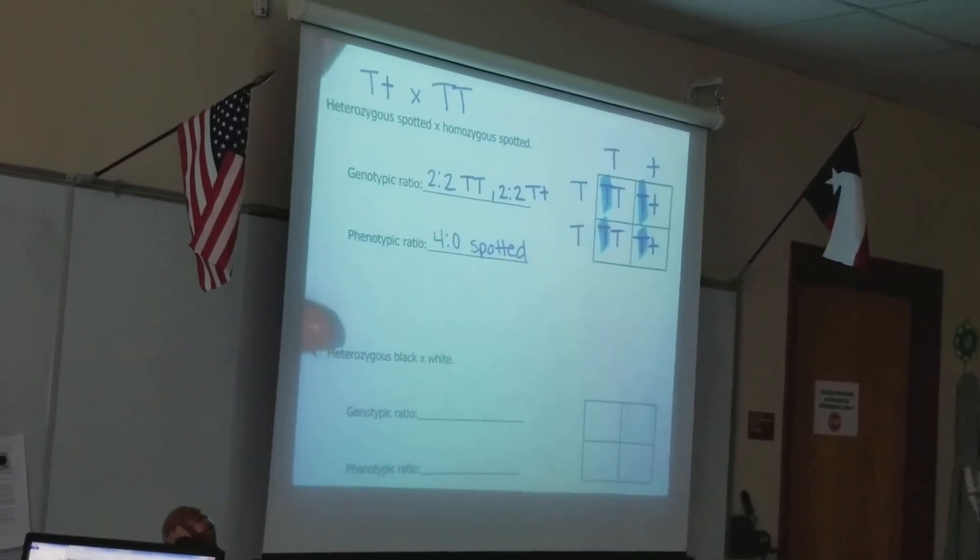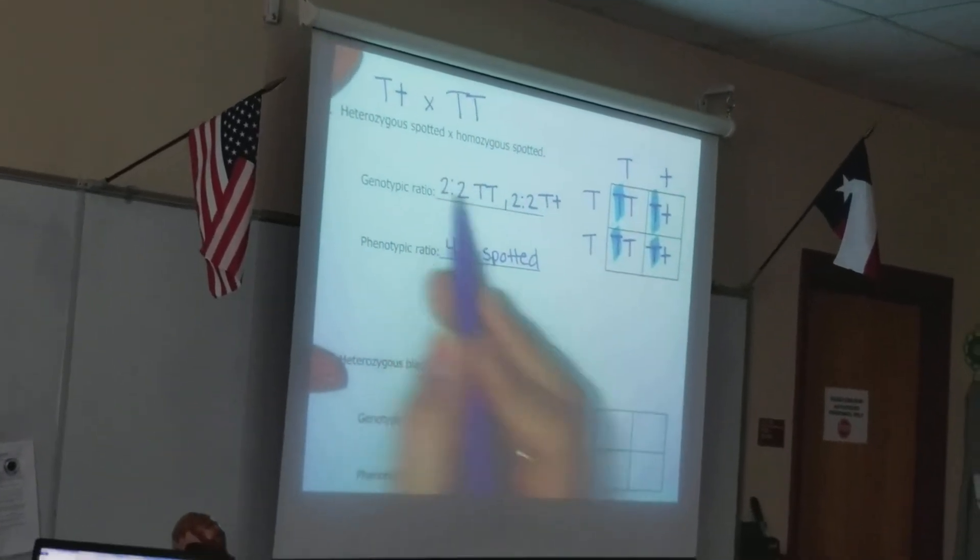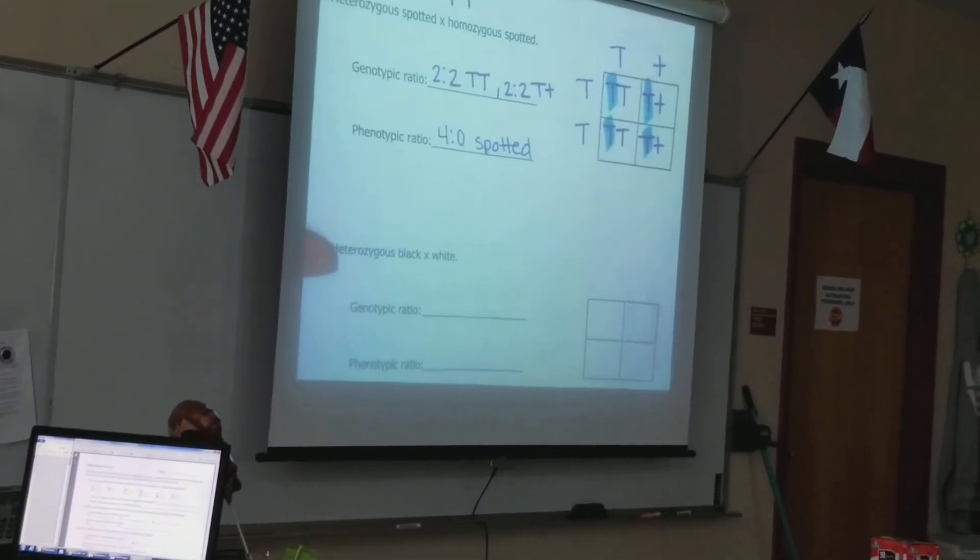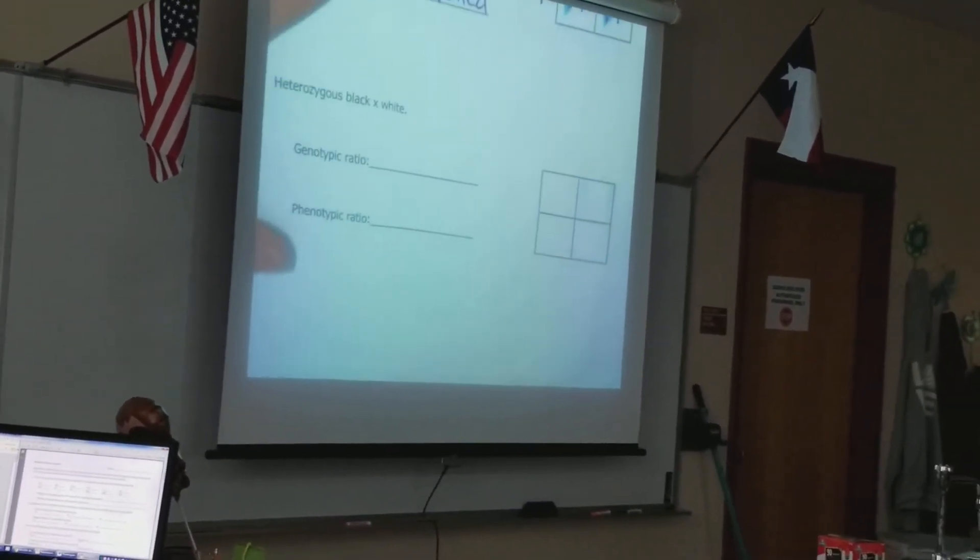The ratios throw everyone off. Just know that your ratios can only equal to the number of squares you have available. So they always have to equal to how many? Four. Four.